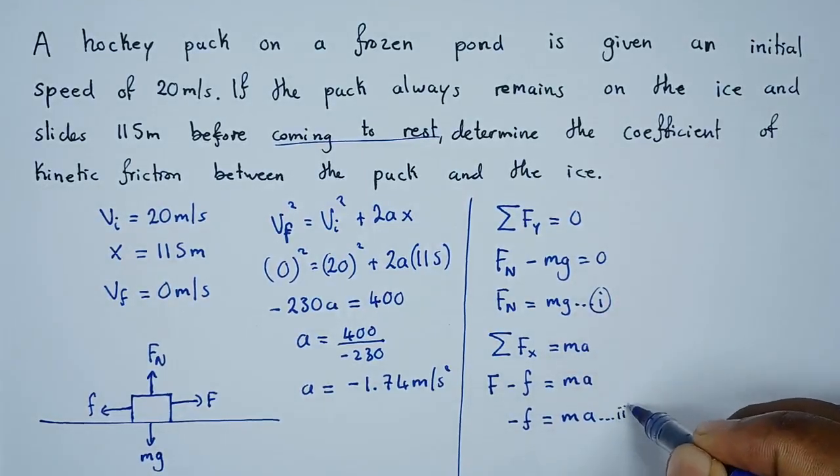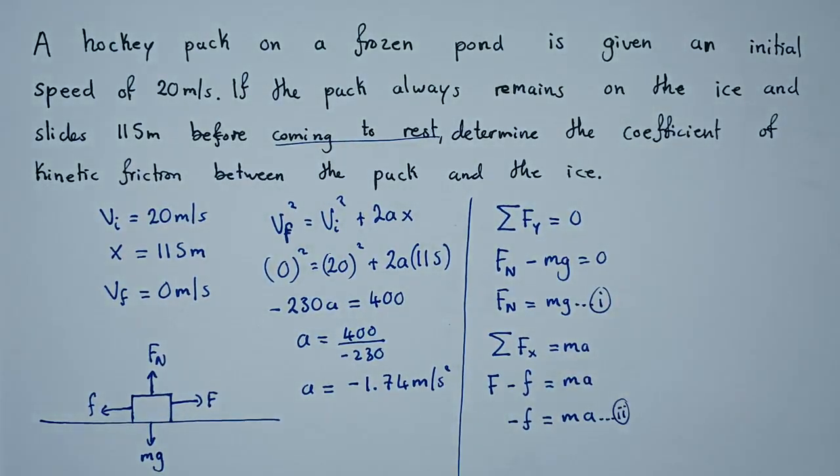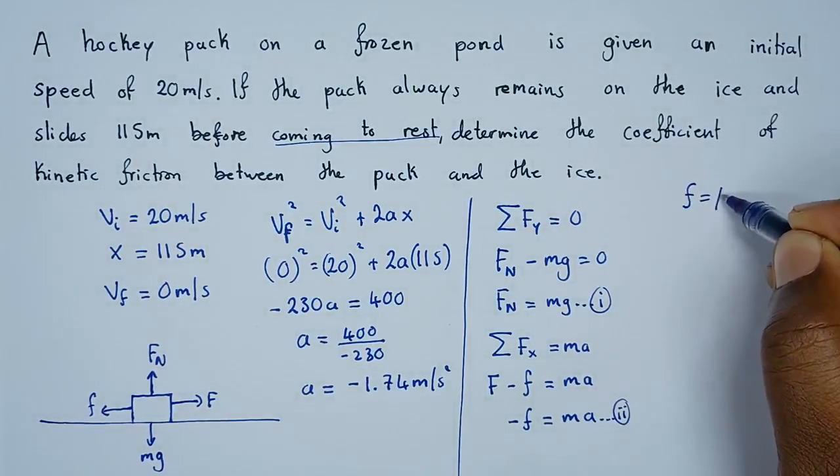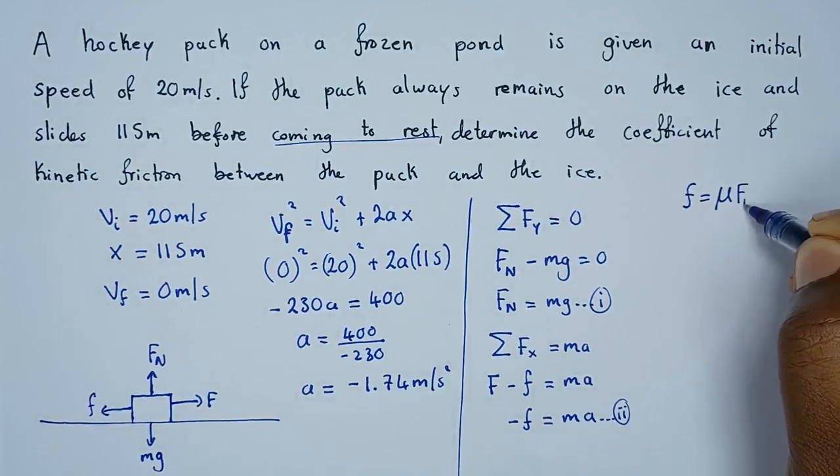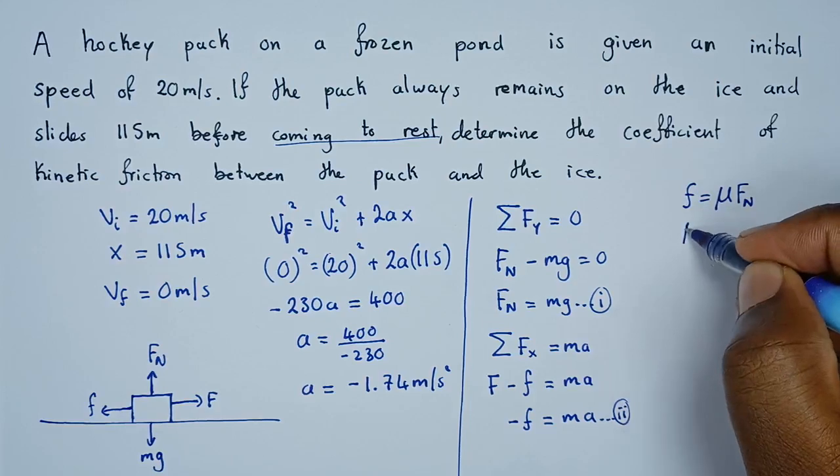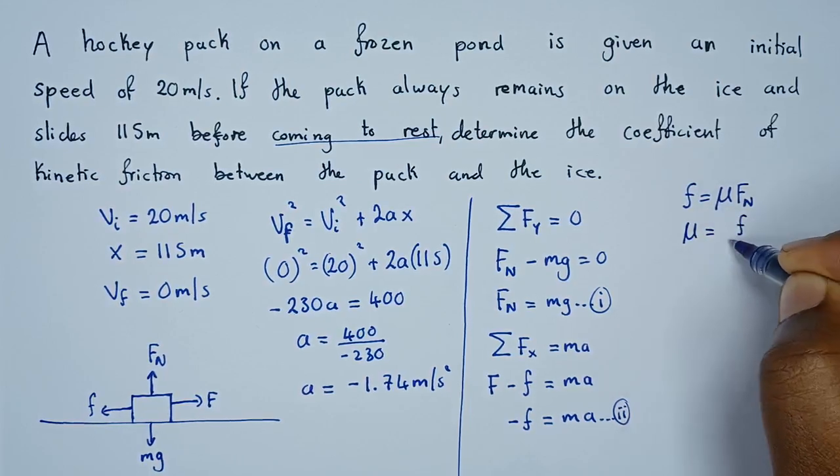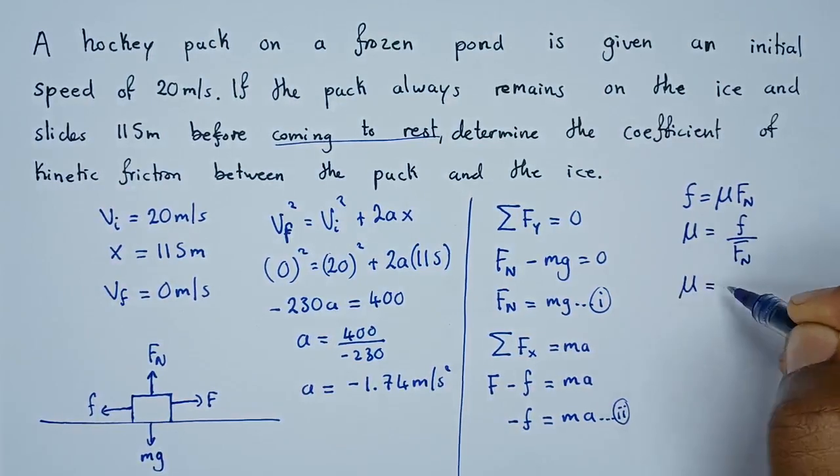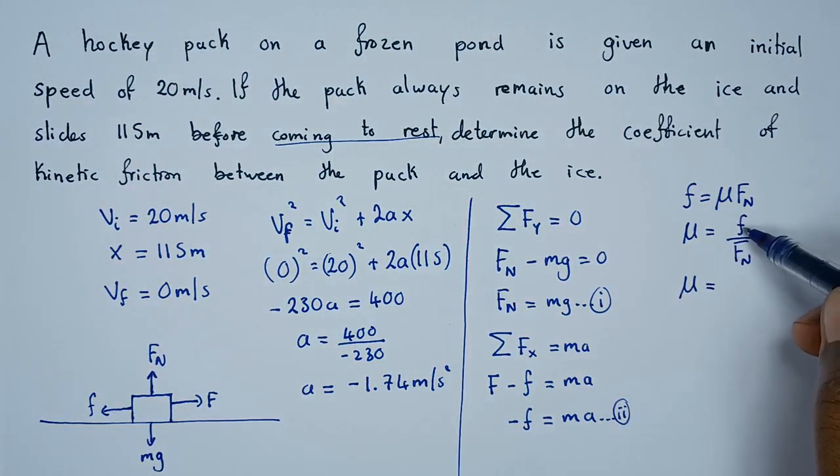What we're looking for is the coefficient of kinetic friction. We know that friction is given by the formula mu times normal force. So let's make mu the subject of the formula, hence mu equals friction force divided by the normal force. So in this case, mu will equal friction force which is this expression that we have here.